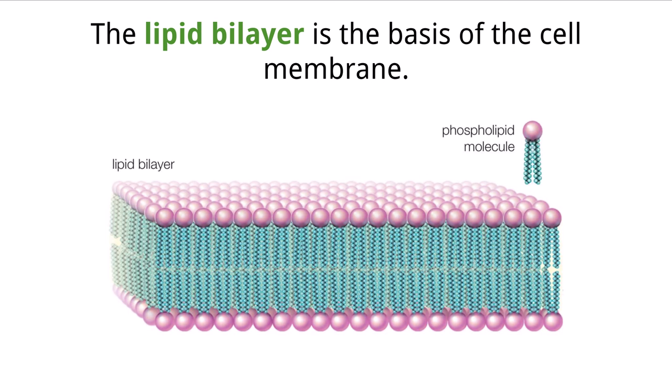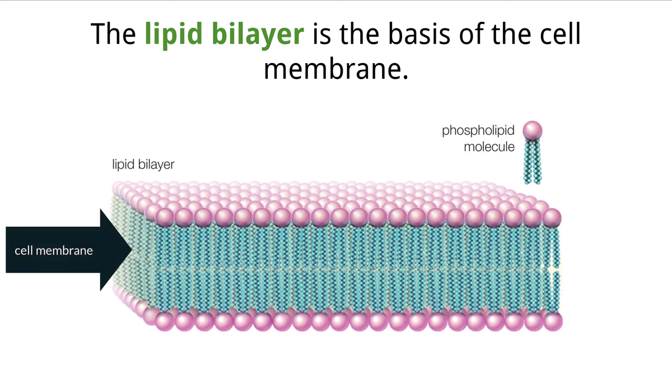At this point we know that cells are the smallest unit of life, but they are made up of many non-living components that are essential for this emergent property of life to exist. Looking from the outside in, one of the first components you will come in contact with when viewing a cell is its membrane. The cell membrane is a unique structure built off of one very important molecule: the phospholipid.